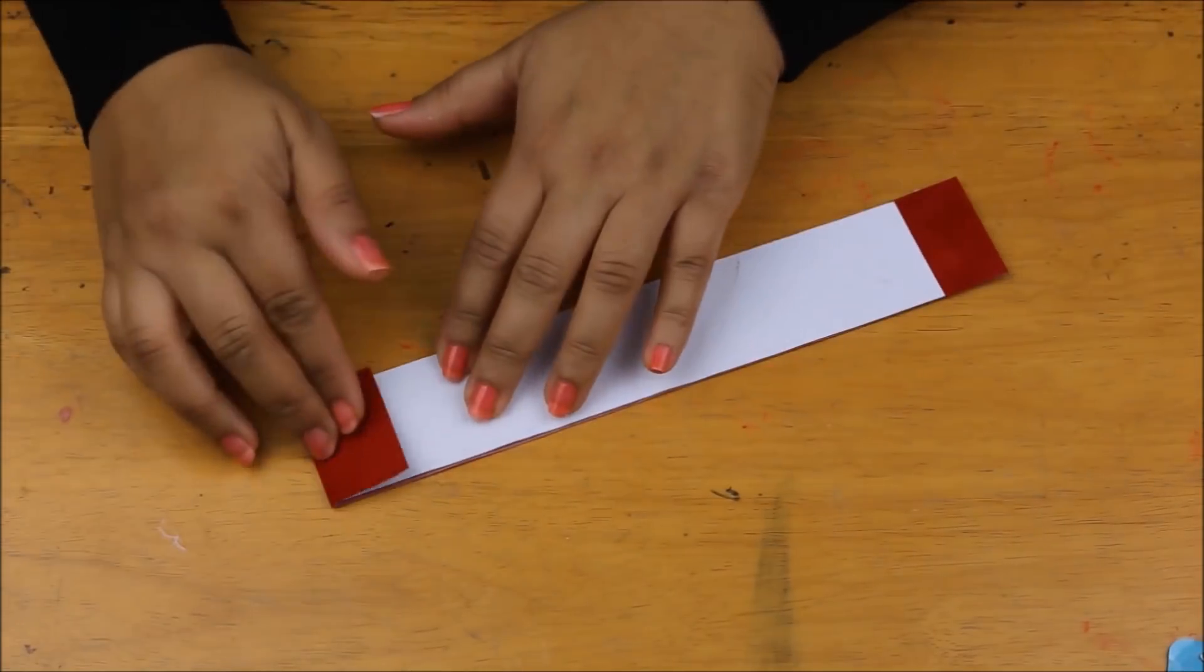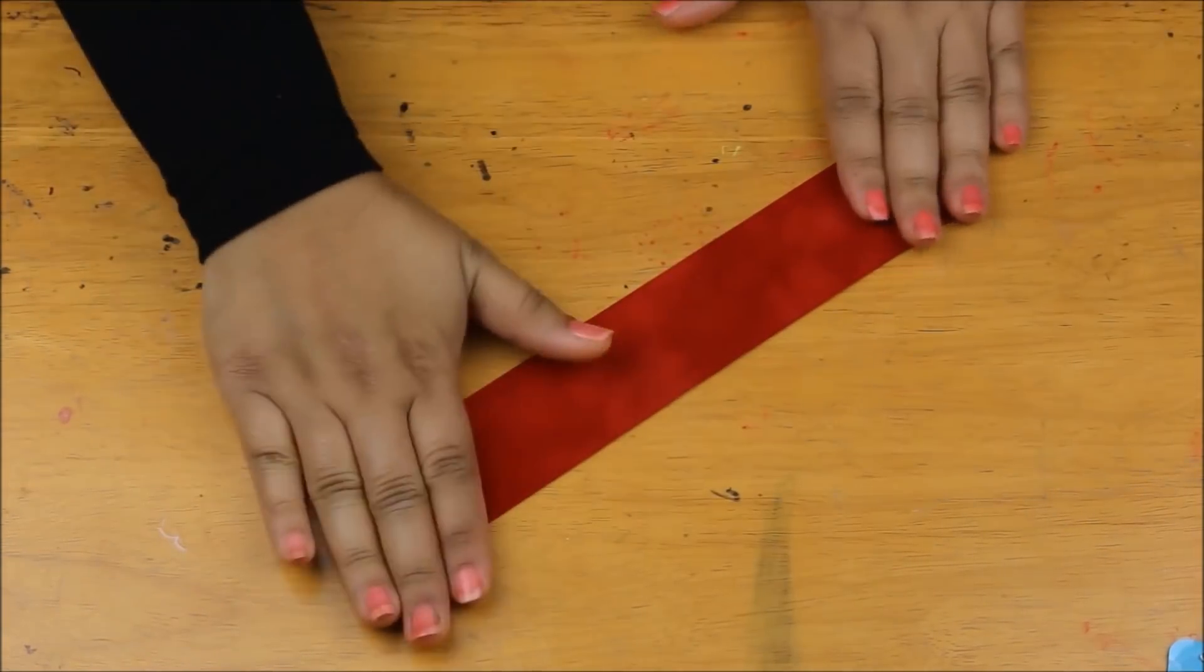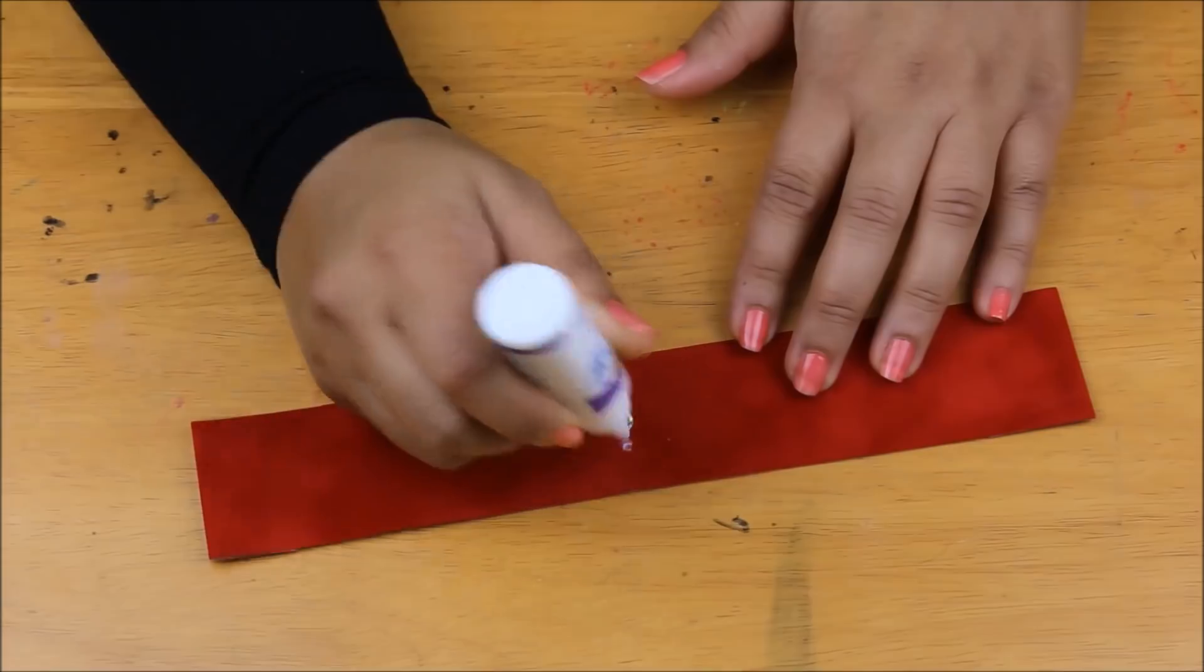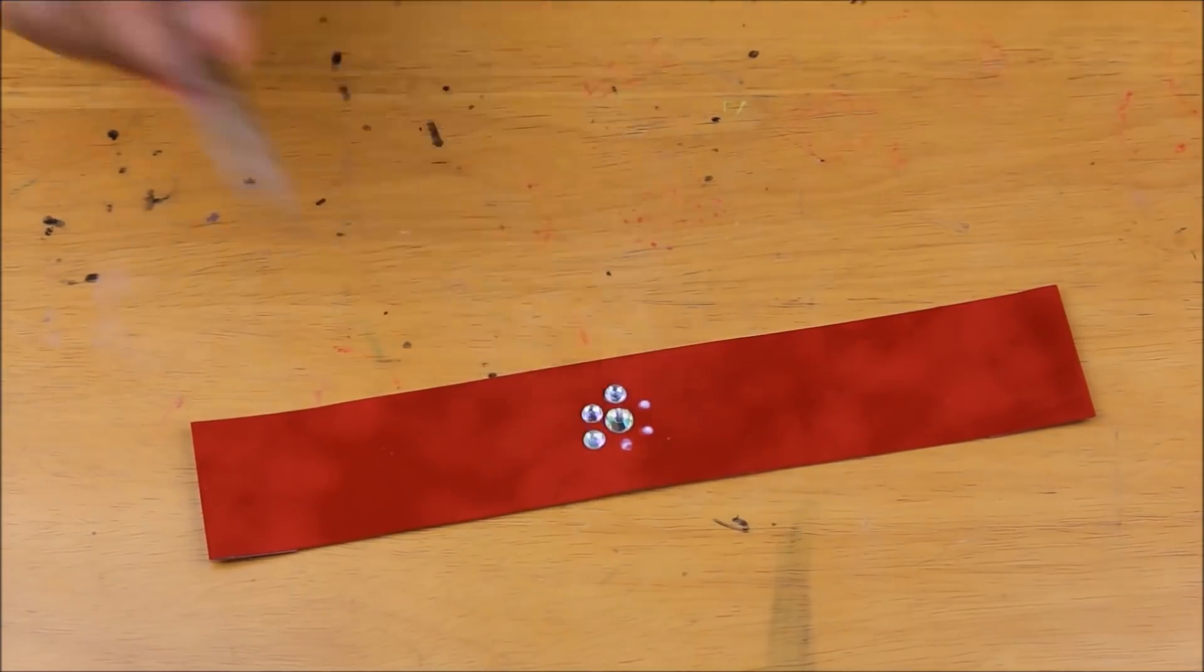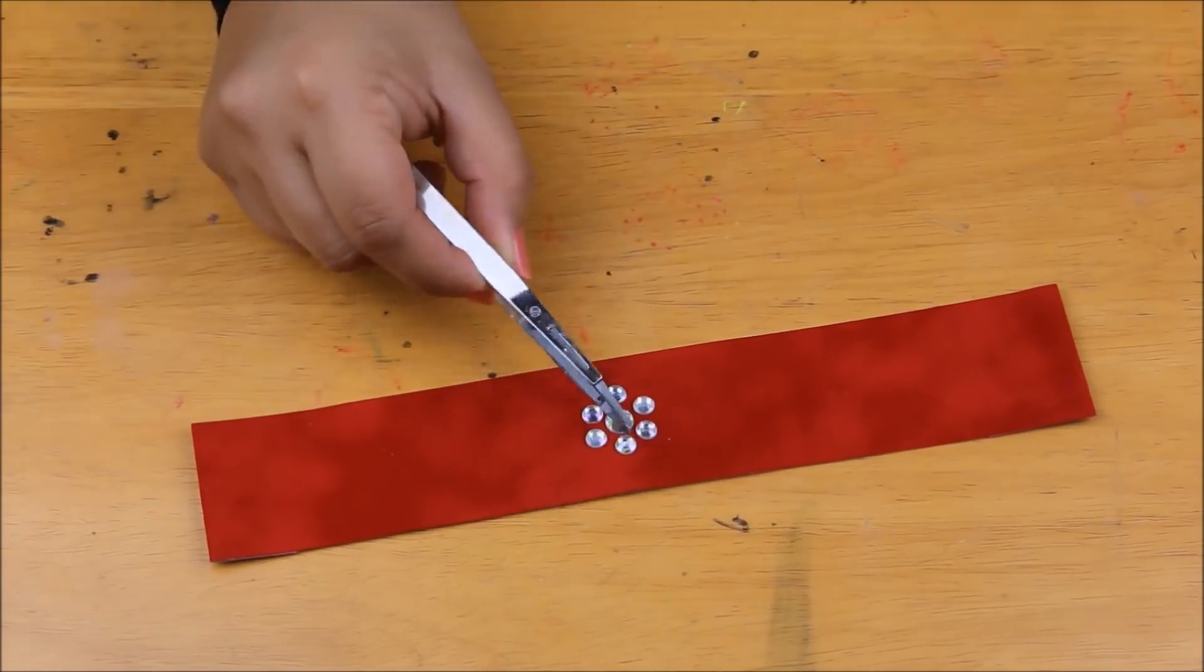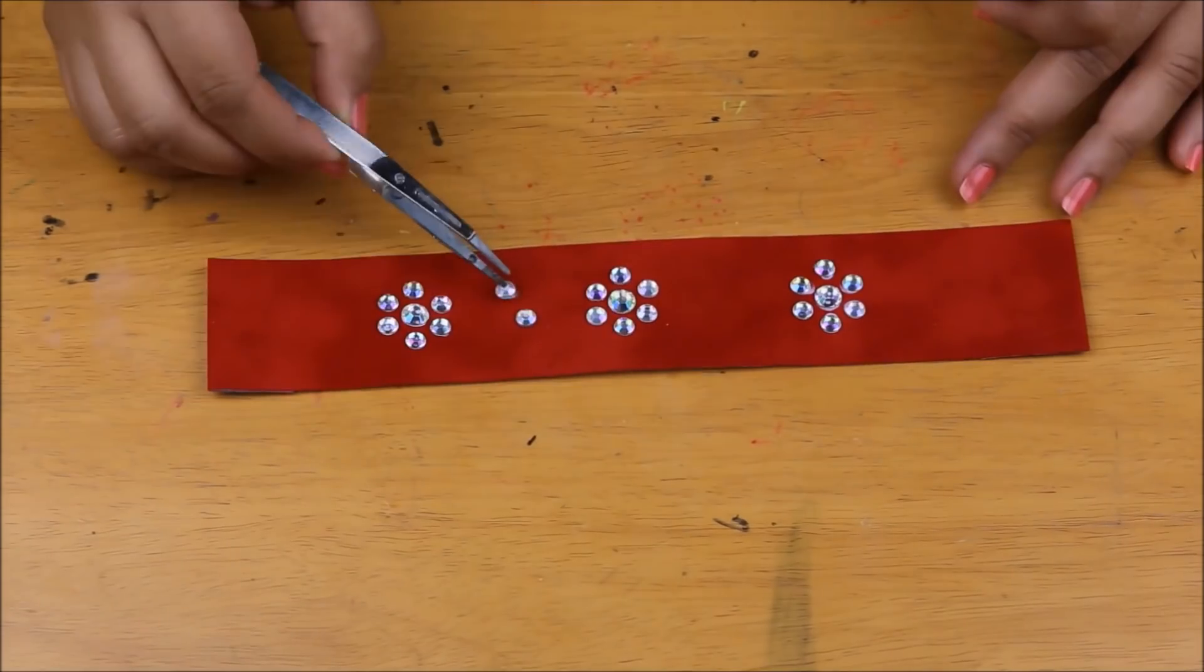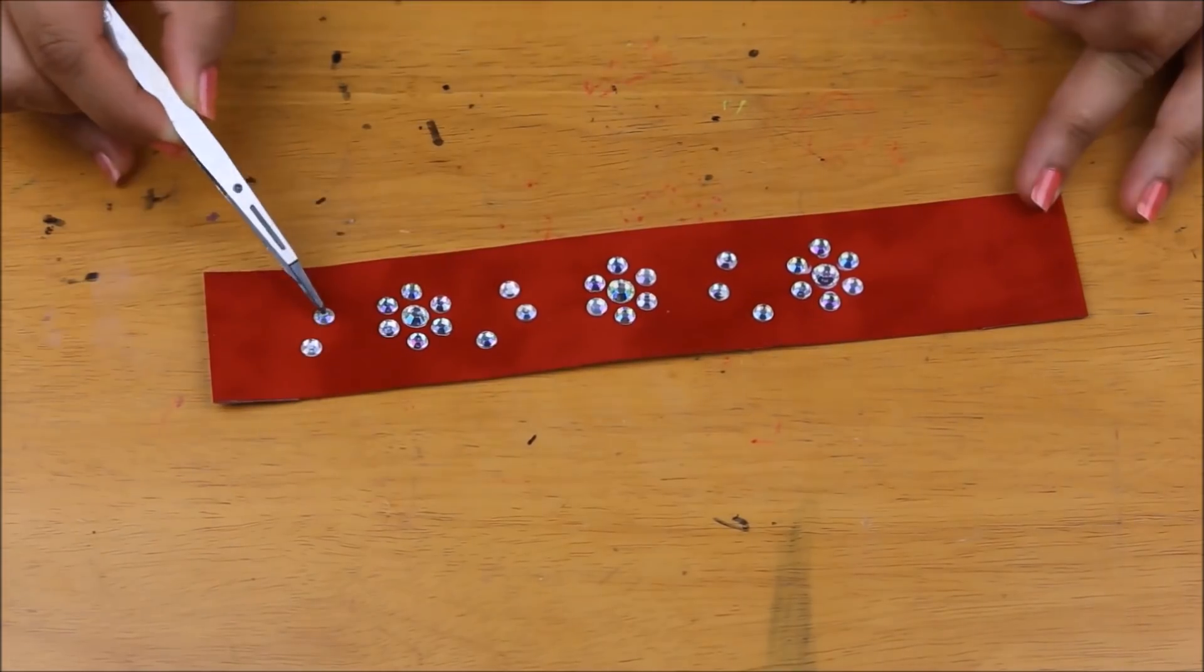Next, I'm going to start decorating this strip with rhinestones. I'm going to take transparent rhinestones and start creating flowers by placing a large rhinestone in the center and surrounding it with six smaller rhinestones. I'm going to create three flowers in total. Around these three flowers, I will place more smaller rhinestones and those will be the leaves of the flowers.